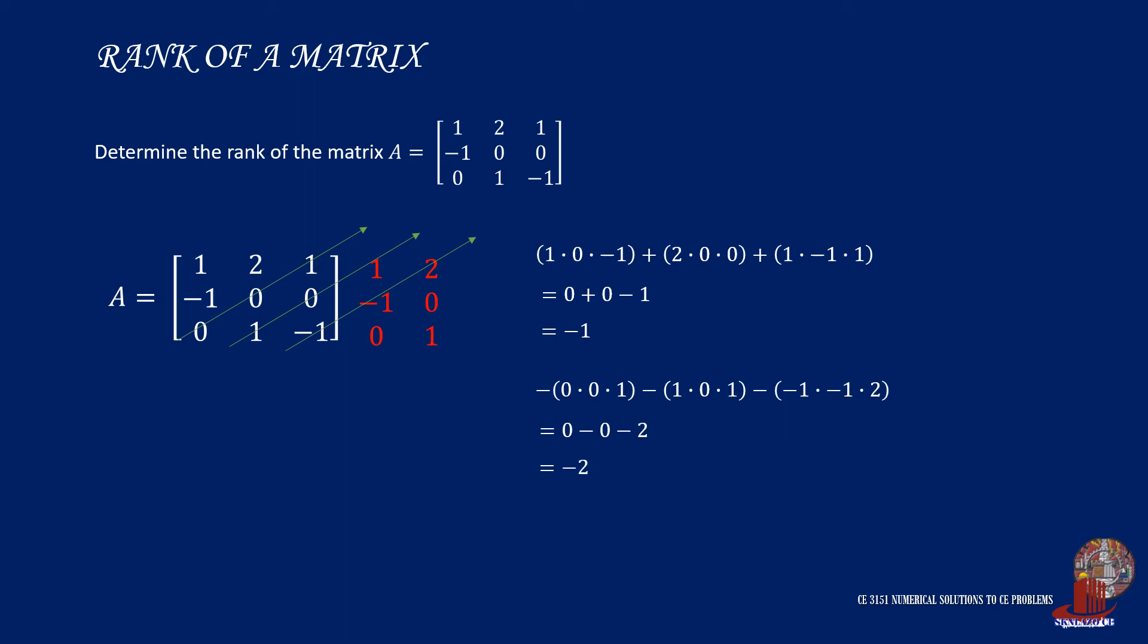Check the first example. Determine the rank of the given matrix. First, find the determinant and by using Cyrus method, the positives are taken as negative 1. Next, check the negatives, and it turns out to be negative 2. So, determinant of A is negative 1 less 2 or that is negative 3, which is not equal to zero. So, matrix A is non-singular, thus it is of rank 3.